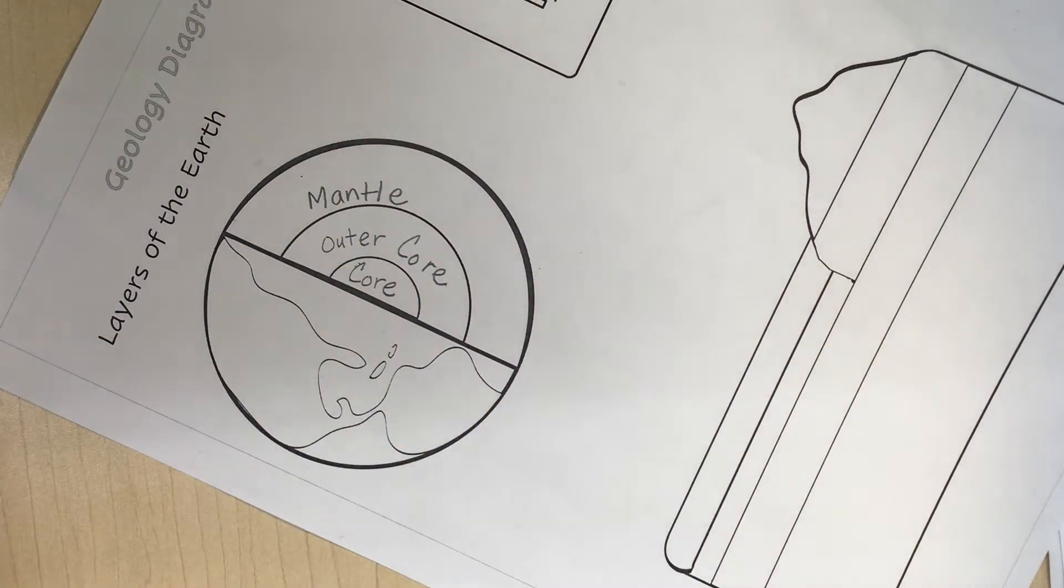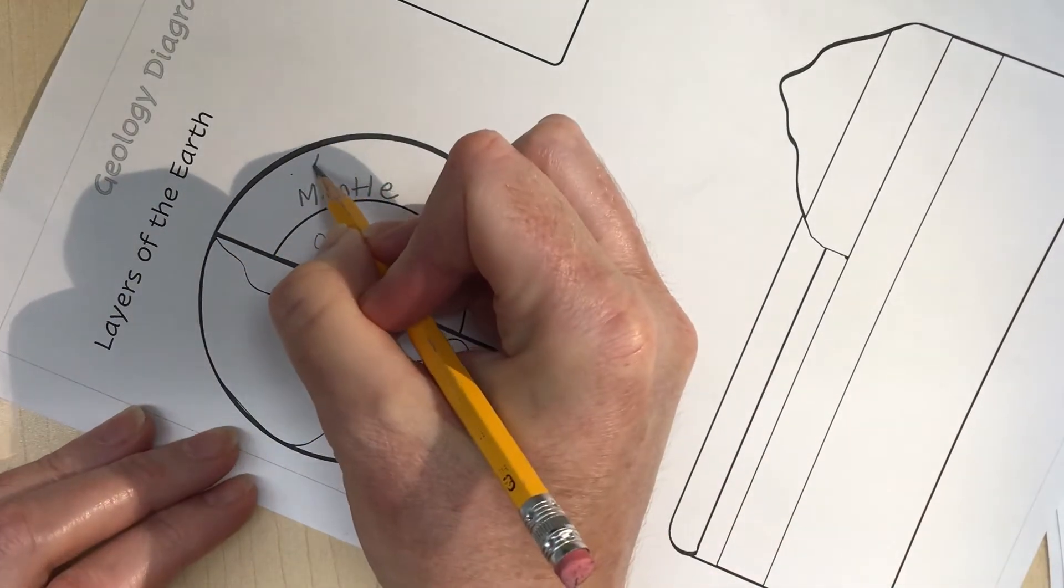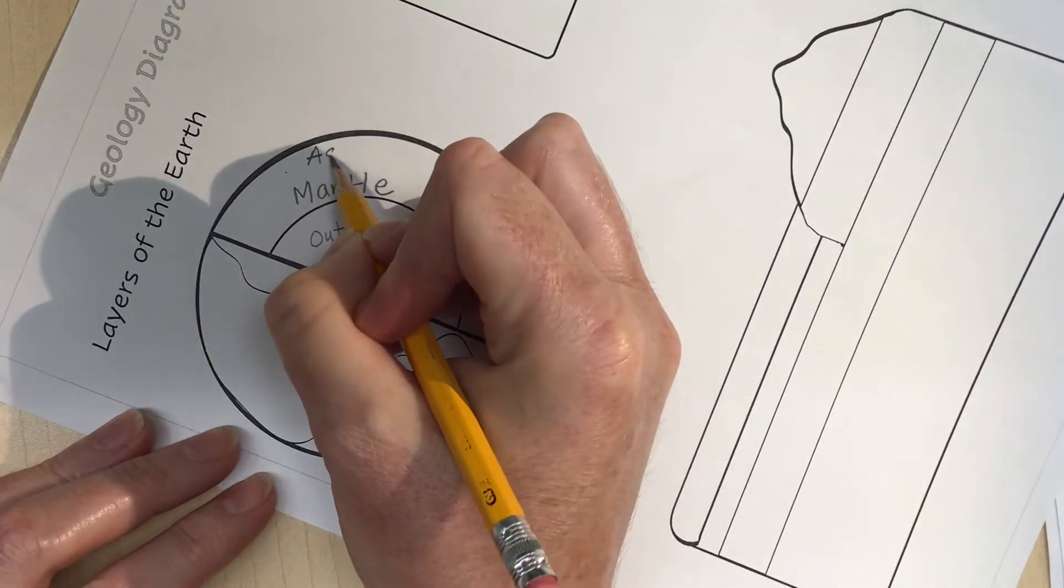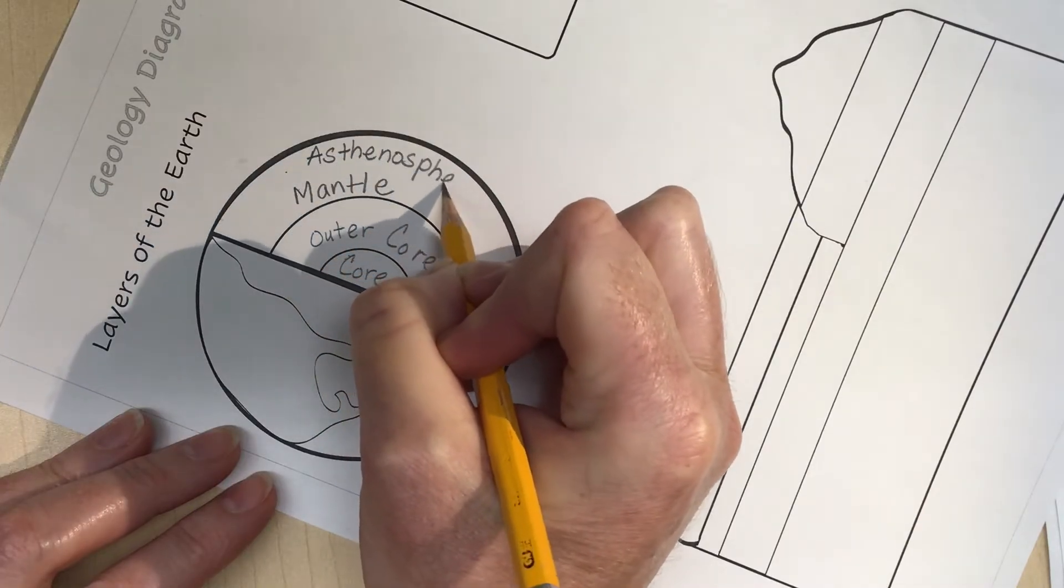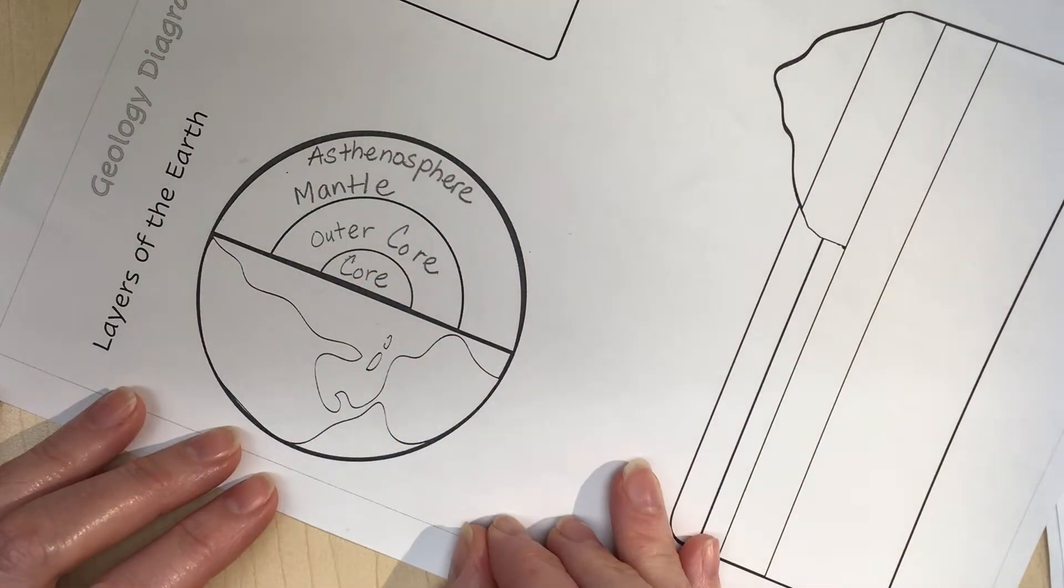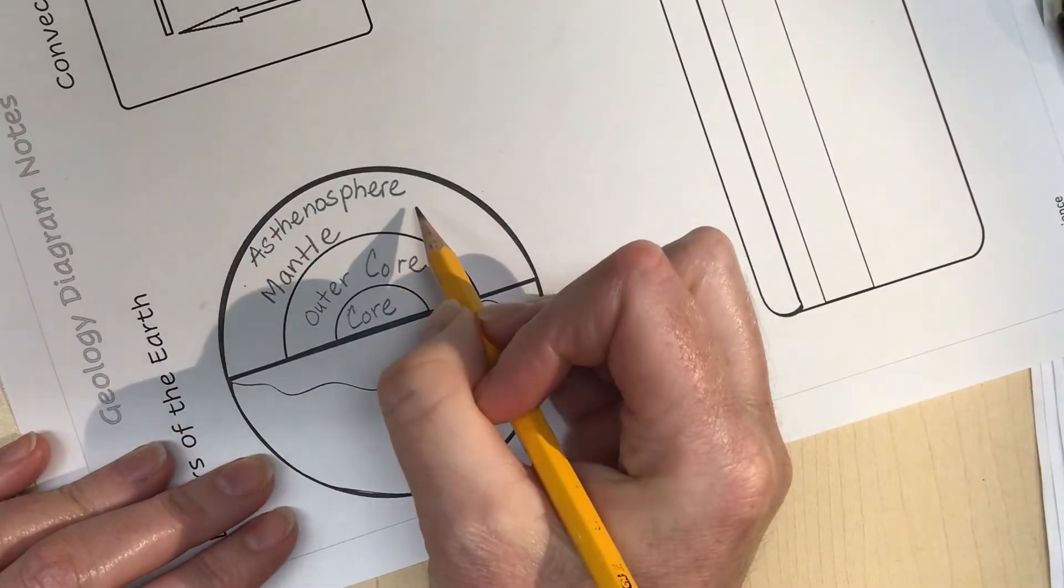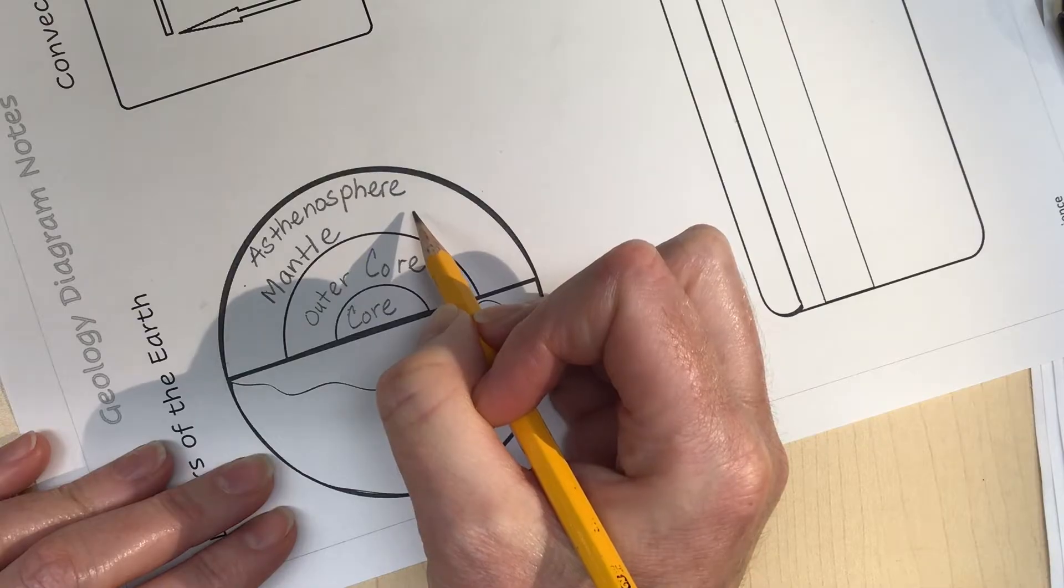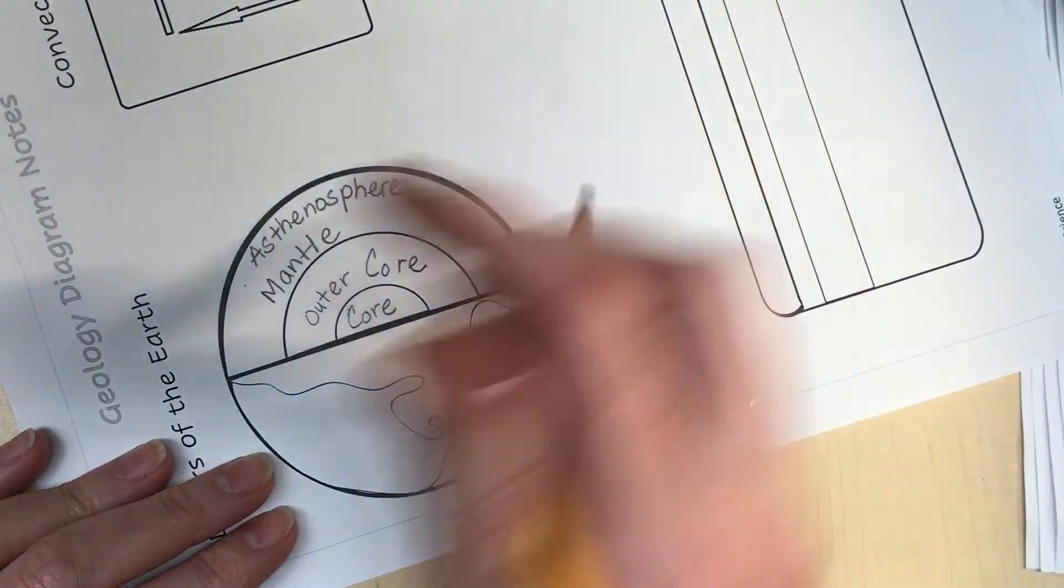This is where there is magma - hot molten rock is in this part here. At the very top of the mantle is the asthenosphere, and it is here where the magma swirls. The magma will move in a circular direction through something called convection. Let's take a look at that in just a second.